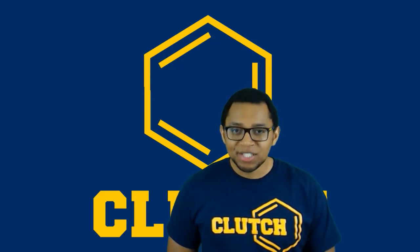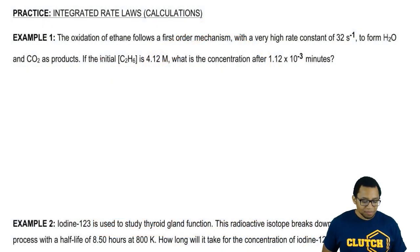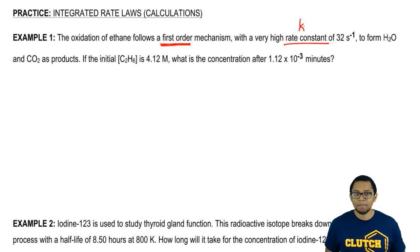Hey guys, let's take a look at the following integrated rate law questions. The oxidation of ethane follows a first order mechanism with a very high rate constant K of 32 seconds inverse to form H2O and CO2 as products. If the initial concentration of ethane is 4.12 molar, what is the concentration after 1.12 times 10 to the negative 3 minutes?